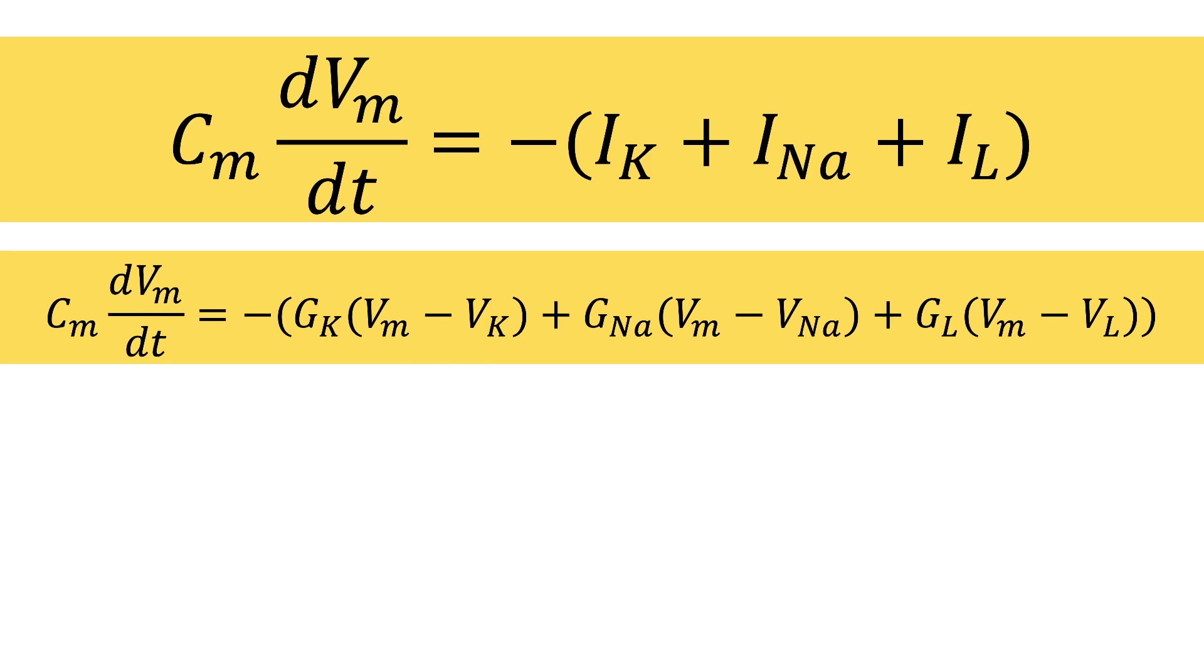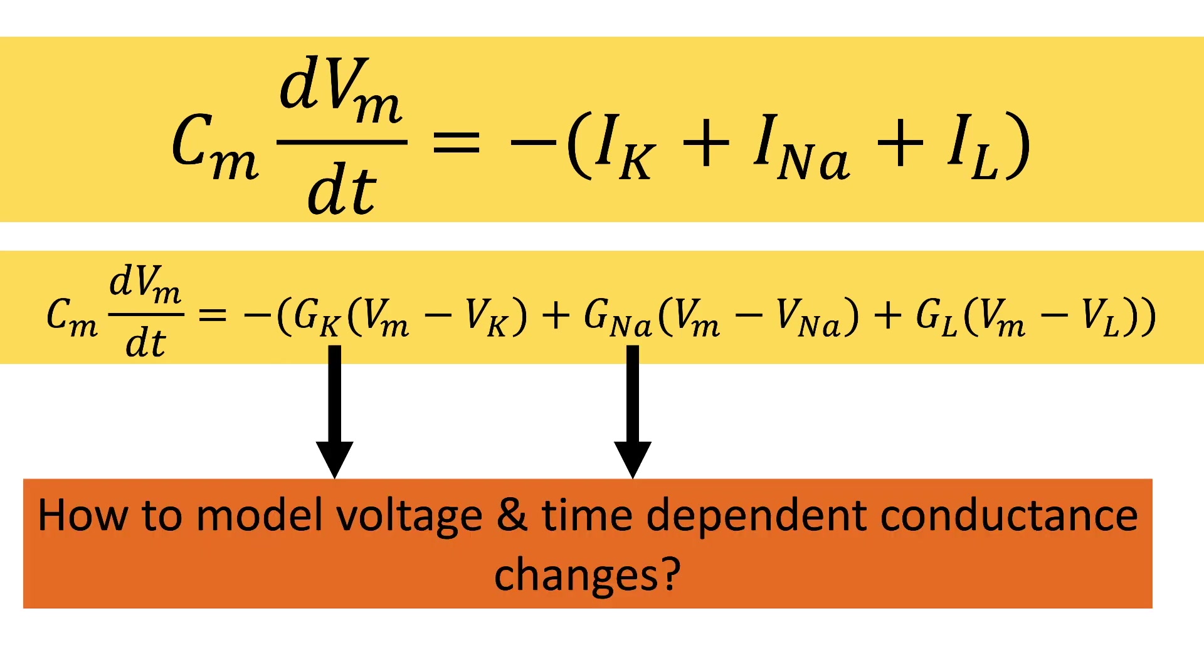The unknown in this formulation are the conductances G. We have learned that they vary with voltage and time, but how exactly do they vary? So the question raised is how do we model our conductance changes.